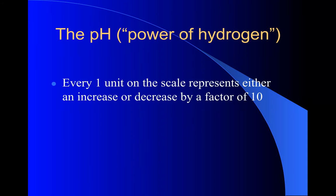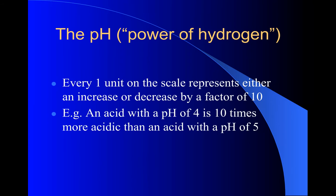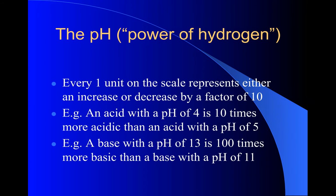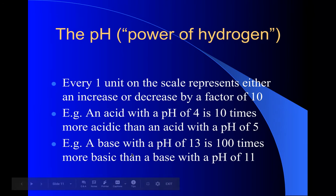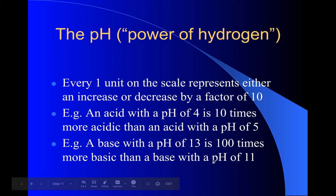Remember that the pH scale is logarithmic — each whole number change is changing by a power of 10. I was right here talking about bases. So a base with a pH of 13 is 100 times more basic than a basic substance with a pH of 11.